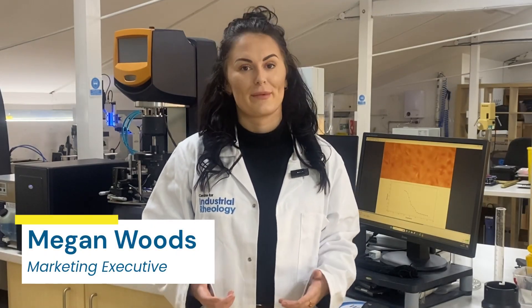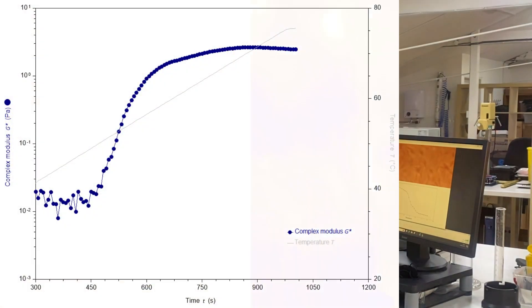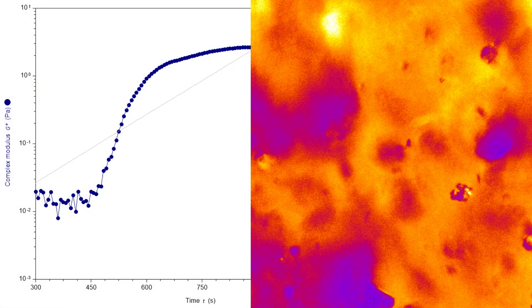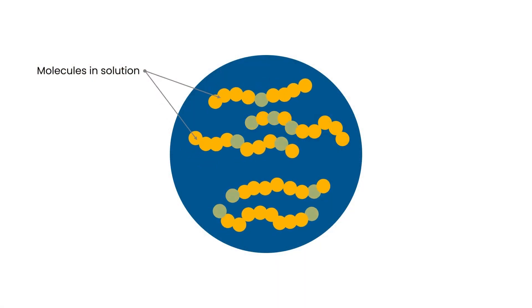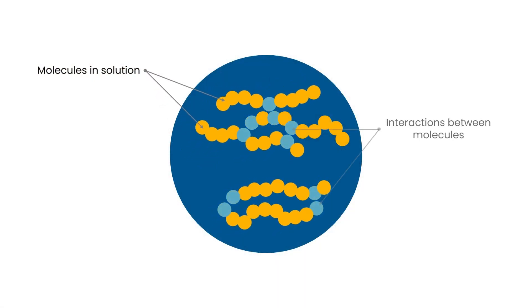Hey guys, welcome back to the lab where today we are looking at gelation through rheomicroscopy. Rheomicroscopy, as its name might suggest, is a combination of rheology and microscopy, and the gelation we're talking about here is the process of a liquid becoming more viscoelastic as the molecules within start interacting with each other.